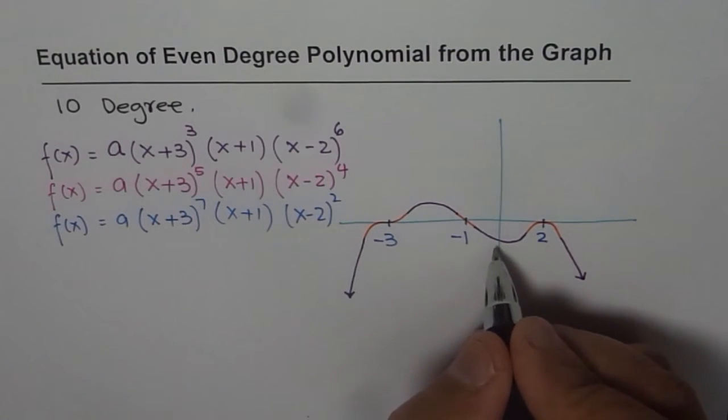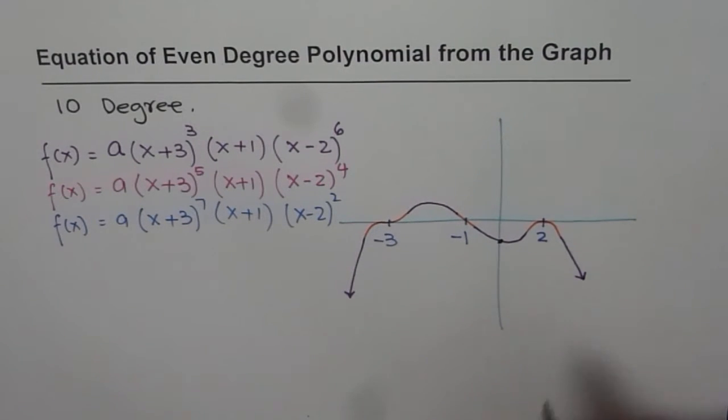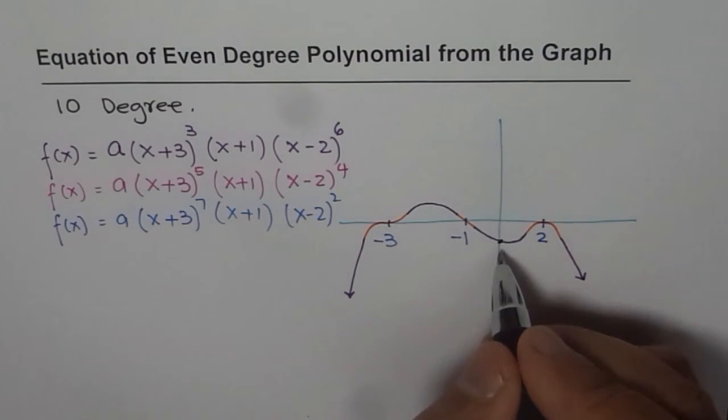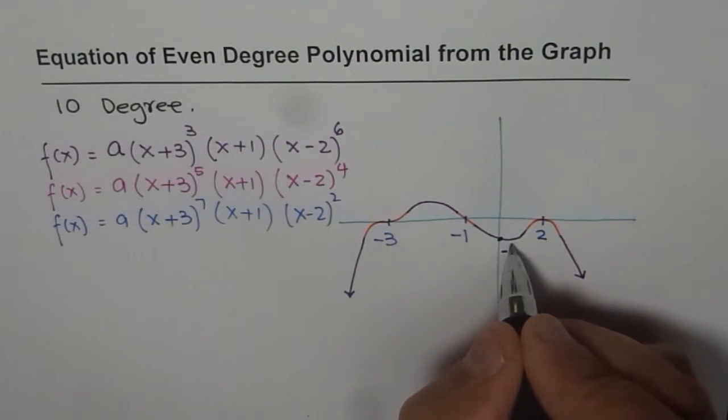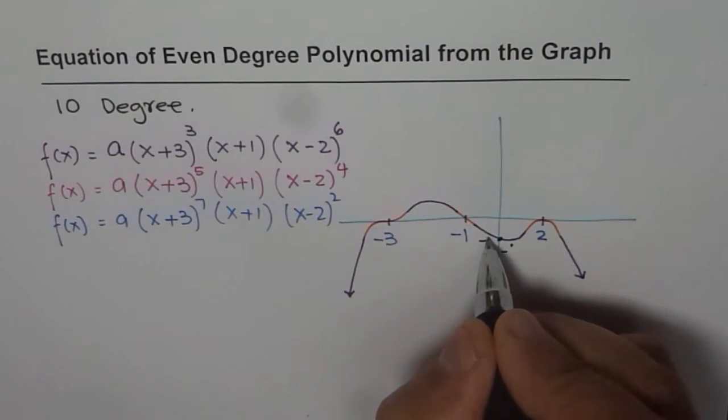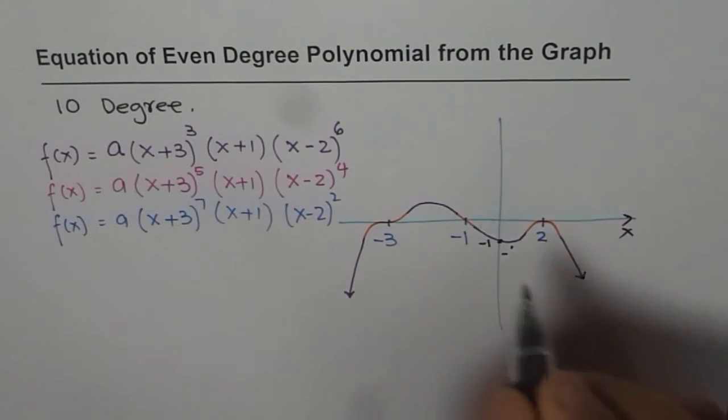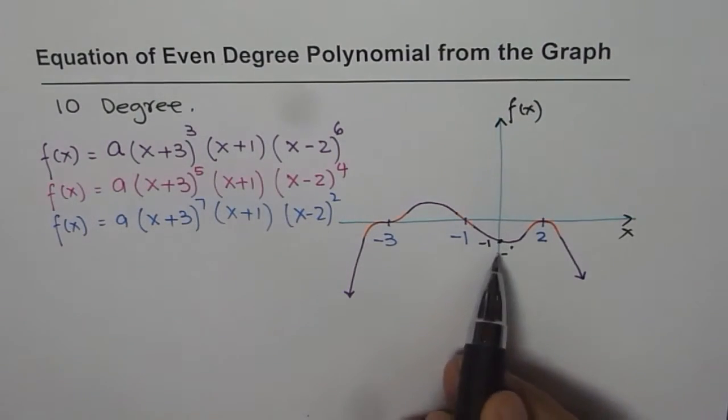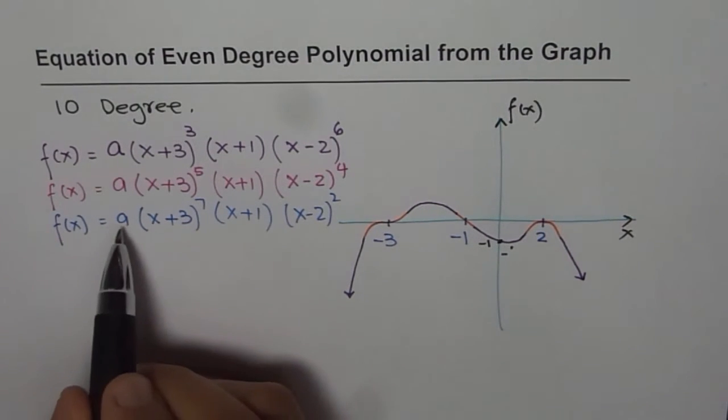Now, all are correct answers. Now, how do we find a specific equation for the given graph? For that, we actually need to know at least one point. So for simplicity, I am taking y-intercept as my point. And let us say it is at 0, minus 1. So I am just taking a very simple value. Let me write minus 1 here. y-intercept.